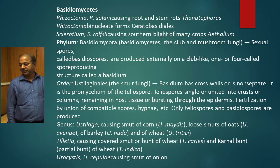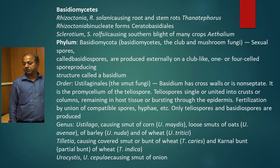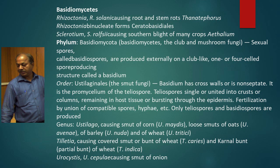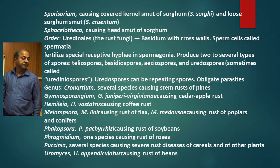Ustilaginales is the smut fungi order. The genera are Ustilago, then Tilletia, then Urocystis. Ustilago causes loose smut of wheat, while Tilletia causes covered smut or bunt of wheat, and Urocystis causes smut of onion. Then Sporisorium, then Ustilaginoidea causing head smut.